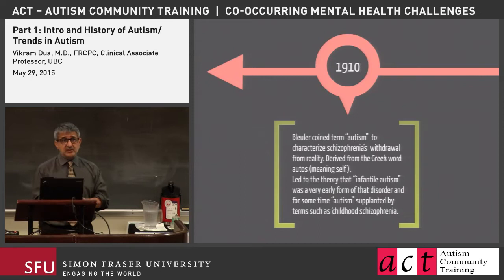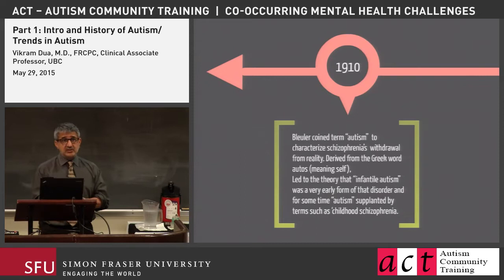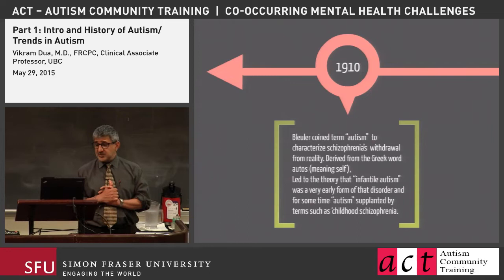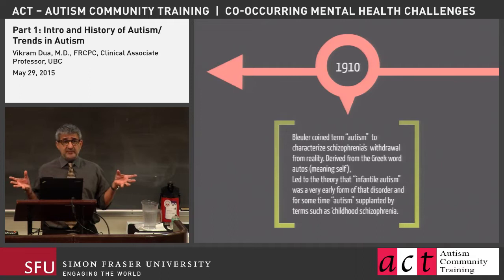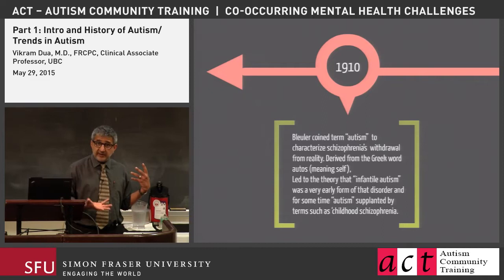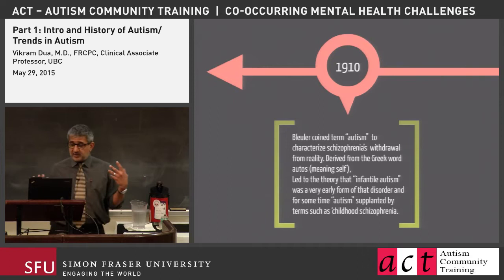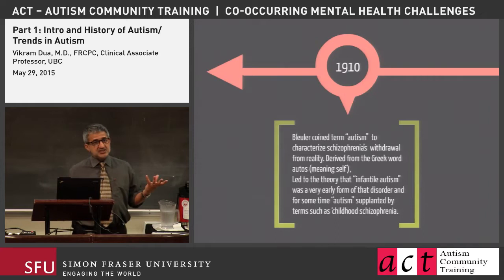The term autism goes back to the early part of the 1900s. Eugen Bleuler, a Swiss psychiatrist, used the term autism in the context of seeing individuals with schizophrenia — specifically talking about this withdrawal, which is part of the negative symptomatology of schizophrenia — deriving the term from the Greek for 'self-involved.' This ultimately, over the next couple of decades, really influenced the course of things.